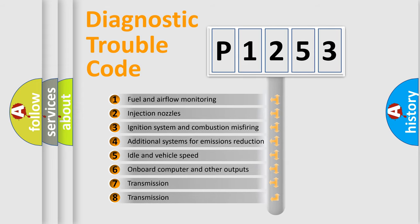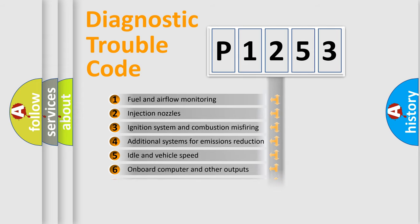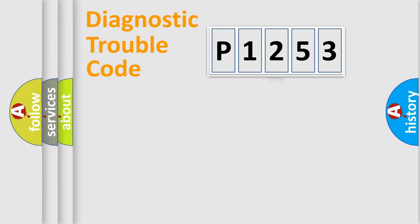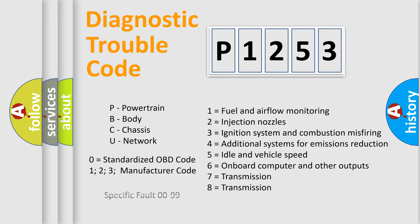The third character specifies a subset of errors. The distribution shown is valid only for the standardized DTC code. Only the last two characters define the specific fault of the group. Let's not forget that such a division is valid only if the second character code is expressed by the number zero.